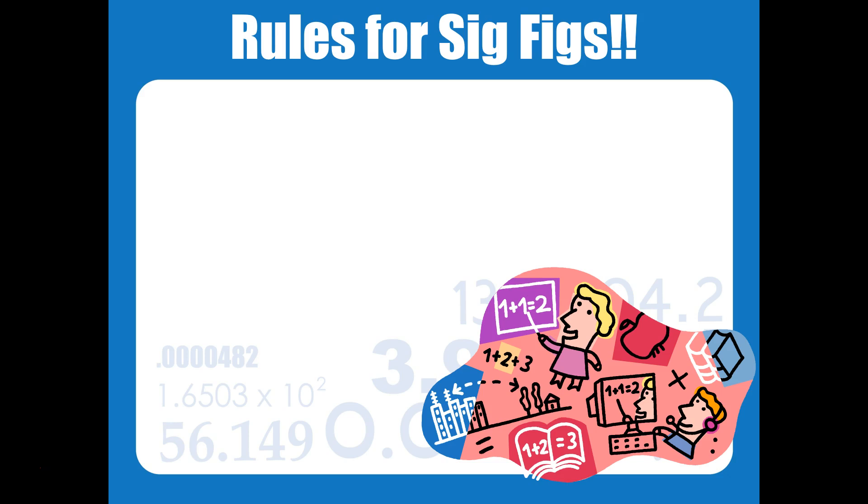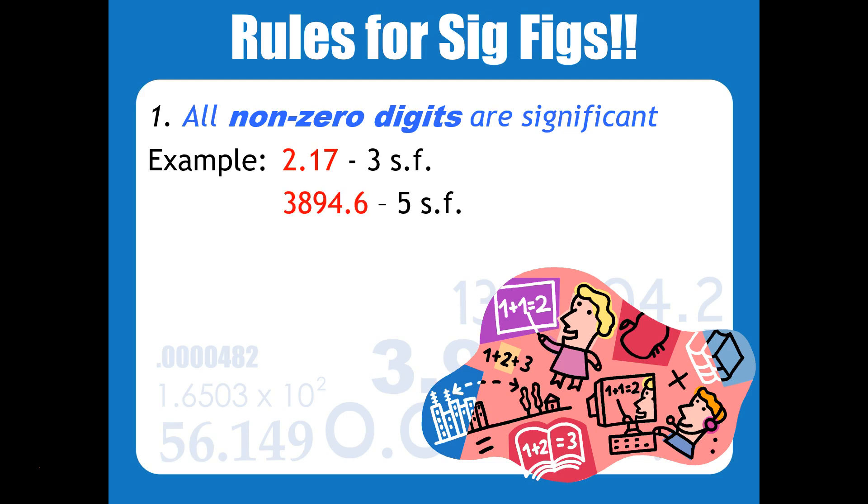Here are some rules for sig figs. The first one is fairly easy. All nonzero digits are considered significant. So for example, 2.17 would have 3 sig figs. 3894.6 has 5 sig figs.